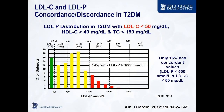You believe all you have to do is make LDL cholesterol less than 50? Here's that study of diabetics again. Look at the LDL-P distribution on the x-axis — over 1,000 would be residual risk. These are people whose LDL-C was less than 50, and yet 14% still had an abnormally elevated LDL particle count. Driving LDL-C down to 50 helps a lot of people with their LDL particle counts, but you're missing some — and how would you know that if you're not measuring LDL-P?